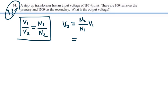In this case, it's going to be 1,500 turns ratio to 100 turns times the primary voltage of 110 volts RMS.